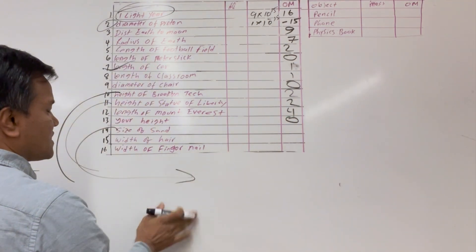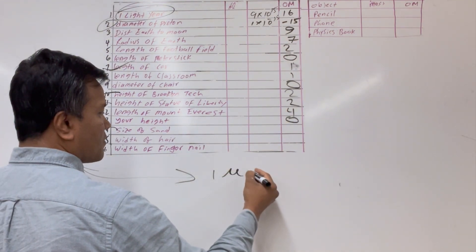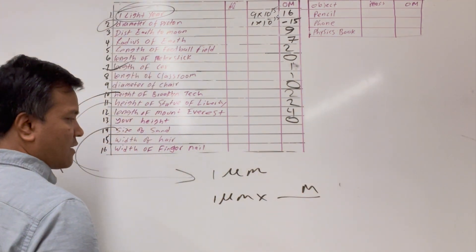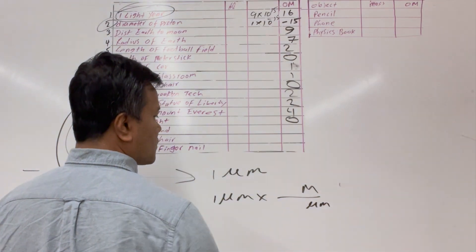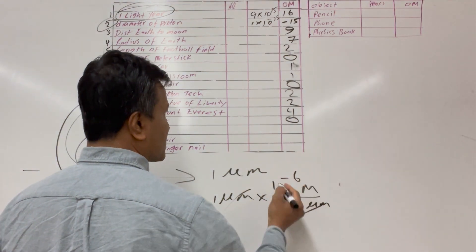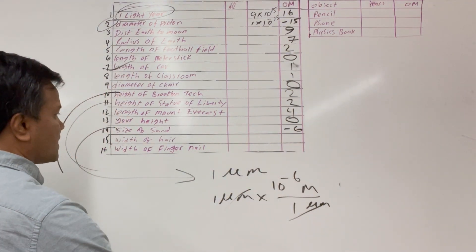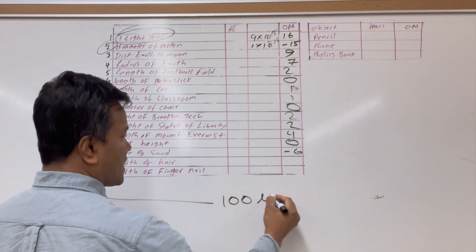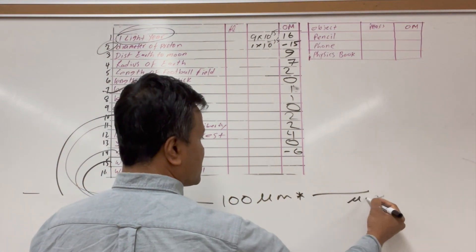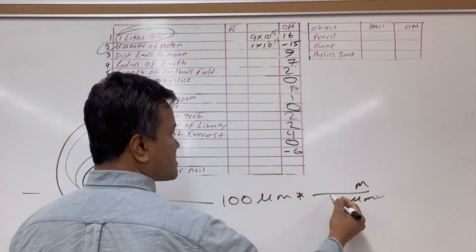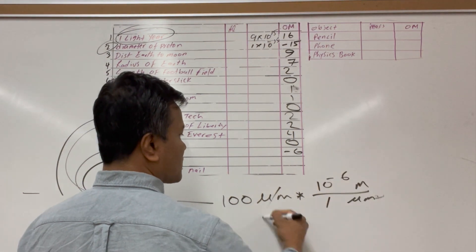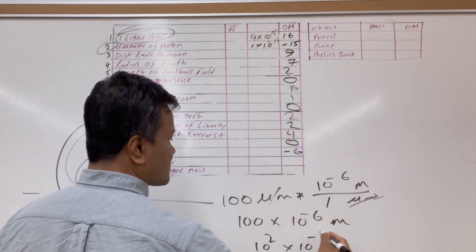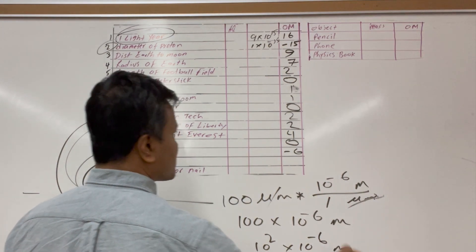The size of a grain of sand is about 1 micrometer. Since 1 micrometer equals 10⁻⁶ meters, the order of magnitude is negative 6. The width of a human hair is about 100 micrometers: 100×10⁻⁶ = 10⁻⁴ meters, so the order of magnitude is negative 4.